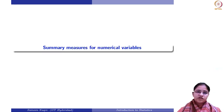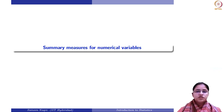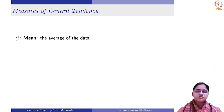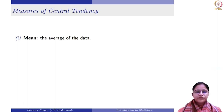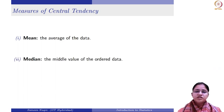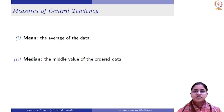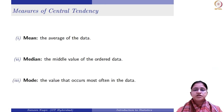We now move on to the summary measures for numerical variables. Numerical variables can be either discrete or continuous. The first summary measure for numerical variables is measures of central tendency, which basically gives you the idea about the central aspect of the data — what is happening in the middle. The most common measure is mean, which is just the average. You add the observations and divide by the total number of observations. The other one is median — the middle value of the ordered data. You arrange the data in ascending order and look at the middle value, which divides the data set into two halves. Finally, mode is the value that occurs most often in the data.